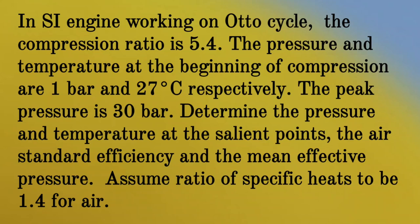Given question: In an SI engine working on an Otto cycle, the compression ratio is 5.4. The pressure and temperature at the beginning of compression are 1 bar and 27 degrees Celsius respectively. The peak pressure is 30 bar. Determine the pressure and temperature at the salient points, the air standard efficiency, and the mean effective pressure. Assume the ratio of specific heats to be 1.4 for air.